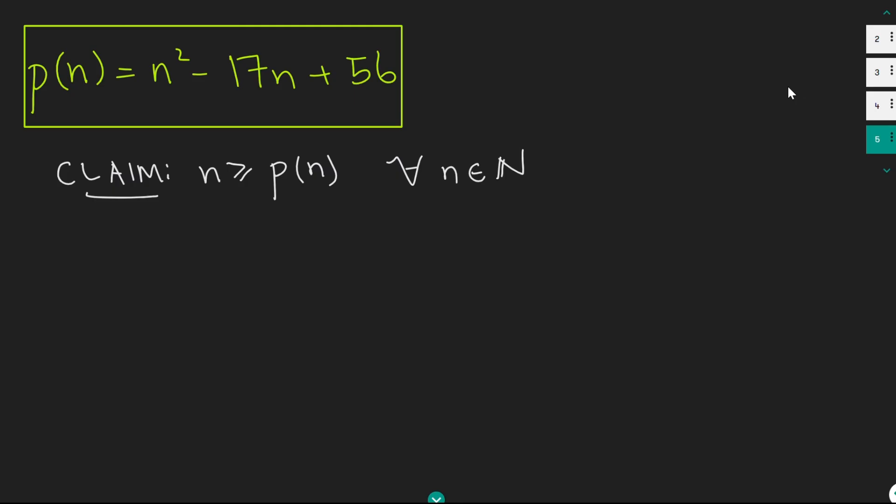Okay, so the hint told us to consider what's bigger, n or p of n. And just by testing a few different values of p of n, you can see that p of n is always less than or equal to n. And it turns out that that is true for every value of n. And we can prove that relatively quickly. So let me make that my claim.